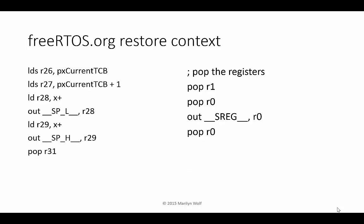Here's the code for restoring context. pxCurrentTCB now points to the new process that's going to run. The code first restores all the basic registers, then restores the status bits, and finally restores the program counter. When it sets the program counter to the value in the TCB, the CPU changes execution to that newly running process. At that point, we've completed the context switch.